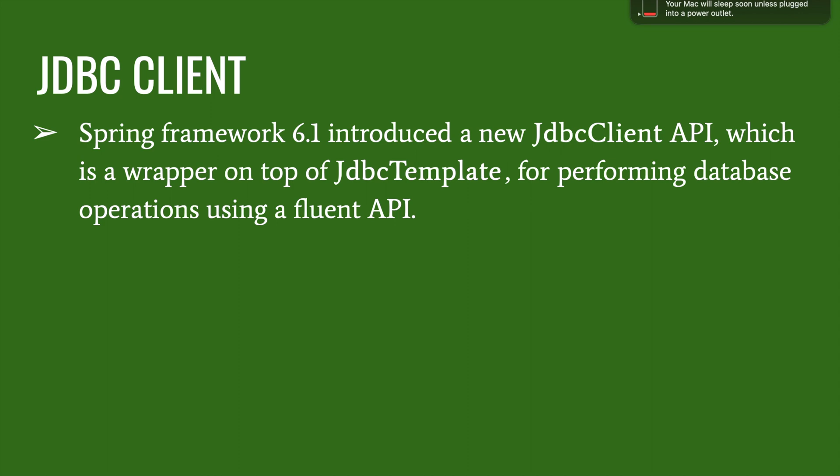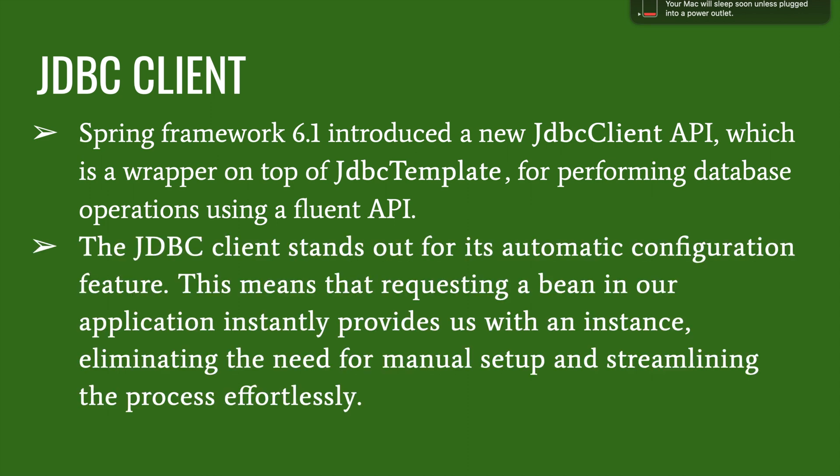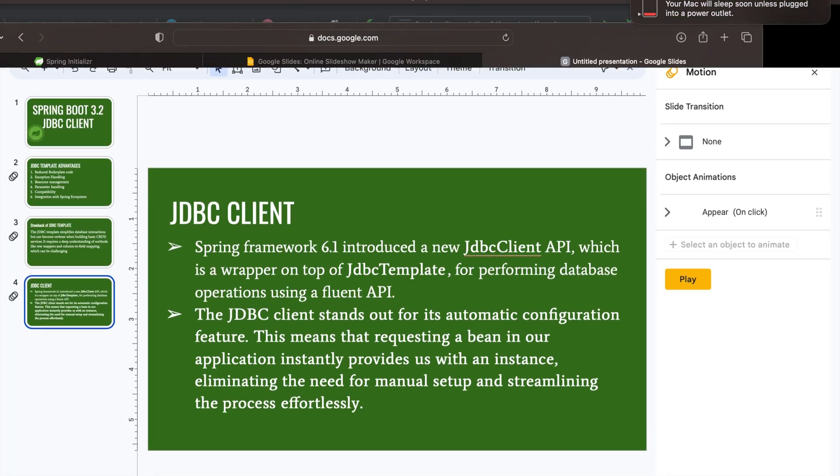To overcome this, Spring 6.1 and Spring Boot 3.2 introduce a new JDBC Client API, which is a wrapper on top of JDBC Template for performing database operations using a fluent API. The JDBC Client stands out for its automatic configuration — requesting a bean in your application instantly provides an instance, eliminating the need for manual setup and removing the need to write row mappers and column-to-field mapping.